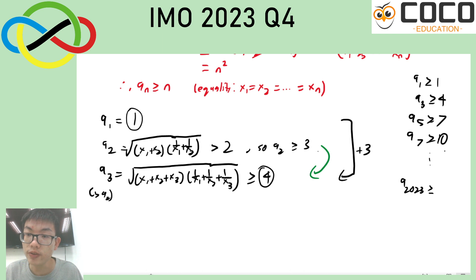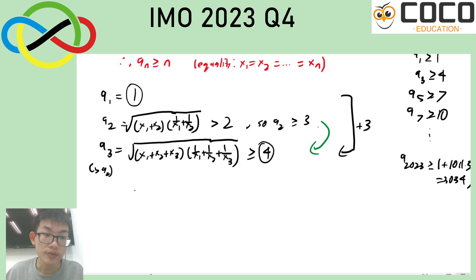So starting from the first one, you would just get 1011 times 3, which is 3034. So this would work as long as I can show that each time you make 2 steps, the value must increase by at least 3. So let's write it like this. This is what I want. But I also need to use the fact that everything here is integer.